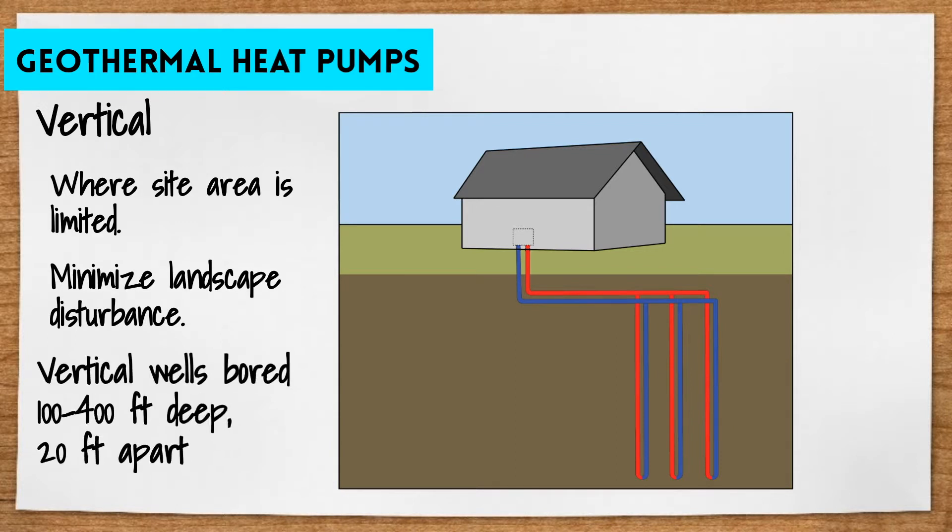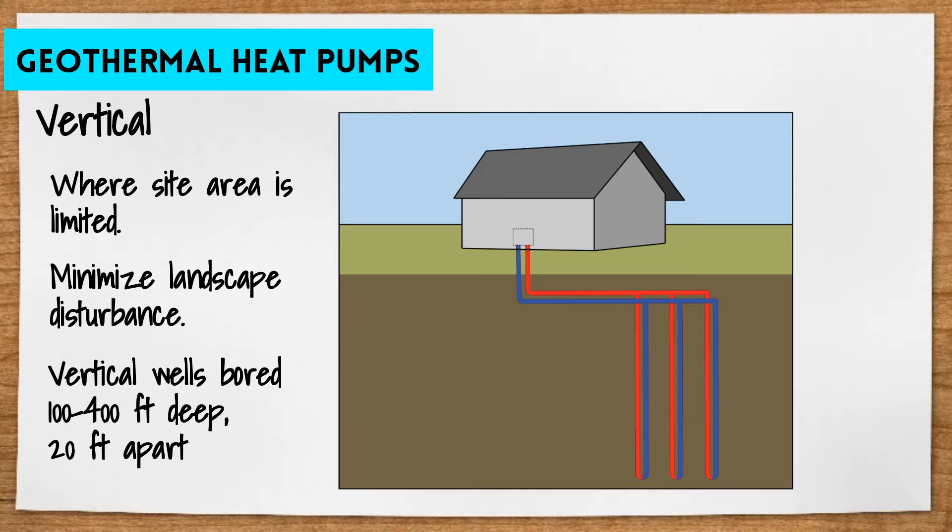In this system, vertical holes are bored about 20 feet apart from one another, going 100 to 400 feet deep. Each hole contains vertical loops that are connected with horizontal pipe placed in trenches and connected to the heat pump in the building.